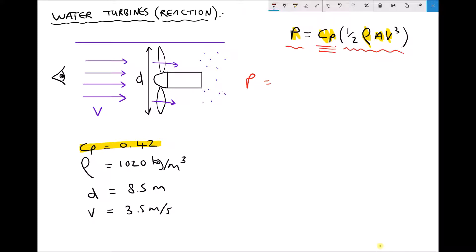The power output equals the coefficient of power, 0.42, times a half, the density, 1020. The swept area, well area is πr squared. We have a diameter of 8.5, which corresponds to a radius of 4.25 meters. We're already in SI units there. So we have π times 4.25 squared times our velocity cubed. Now when we run that through the calculator, we get a power output for this subsea turbine equal to 521,136 watts, or expressed in megawatts, that's 0.521 megawatts.